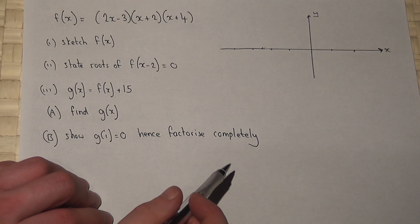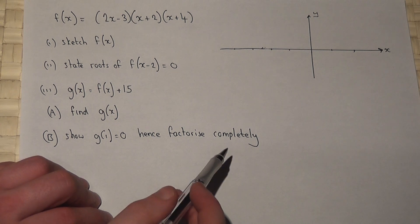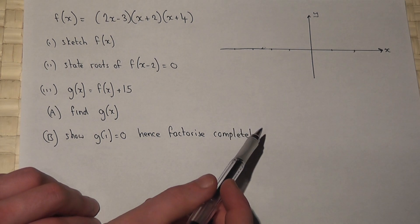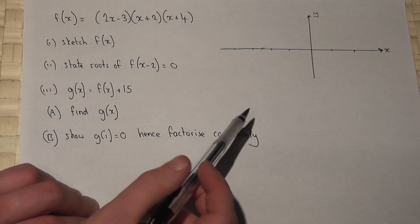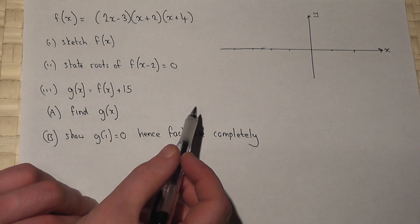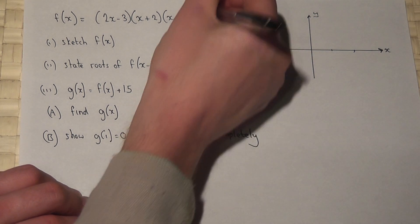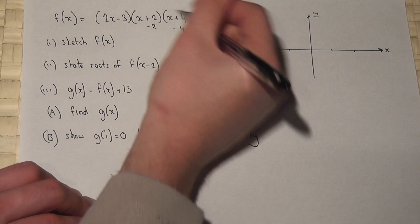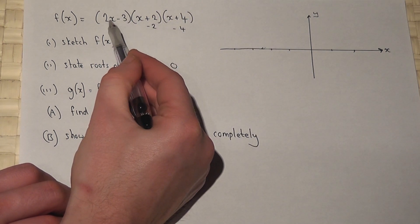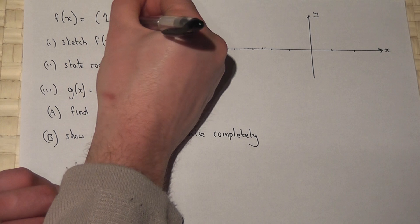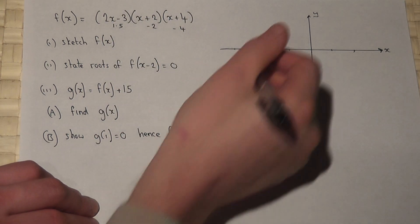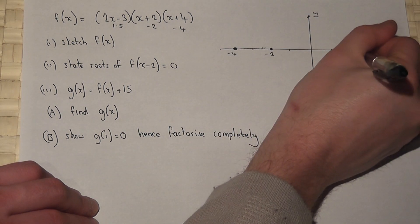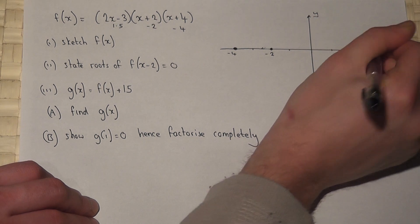This question is a fairly routine function question. We're given f of x in a factorised form and we're asked to sketch the function. Because it's factorised we know the roots. The roots are at x equals minus 4, x equals minus 2, or x equals plus 3 over 2, which is 1.5. So my roots are at minus 4, minus 2 and 1.5.